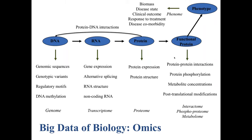If we think about the big data of biology — which people usually call omics — in the context of the central dogma of biology, we have access to data on DNA, RNA (in terms of gene expression profiles, RNA structure, alternative splicing), and at the protein level we can measure protein expression, look at protein structure, protein-protein interactions, post-translational modification of proteins, metabolites, and so on. These give rise to the phenome, and we can measure phenotypes at very large scale: biomass, disease state, clinical outcome. In the context of precision medicine, one important goal is to integrate these omic data to make sense of human diseases.